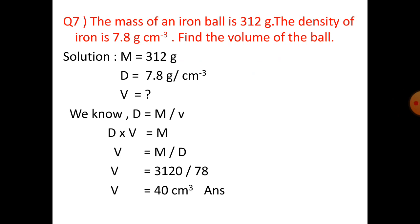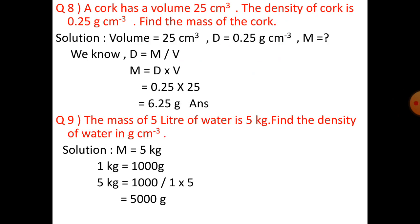Question 8: a cork has a volume of 25 cubic centimeters, the density of cork is 0.25 grams per cubic centimeter. Find the mass of the cork. We have volume as 25 cubic centimeters, density as 0.25 grams per cubic centimeter, and we need to find mass. Density d equals mass divided by volume, that is m divided by v, so m equals d into v.